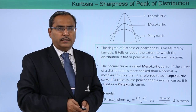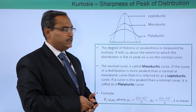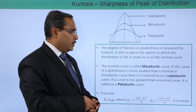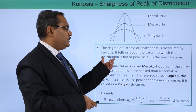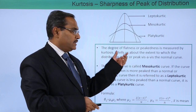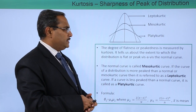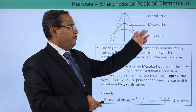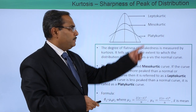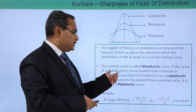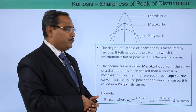Now we move on to kurtosis. Kurtosis measures the sharpness of the peak of a distribution. The degree of flatness or peakedness is measured by kurtosis — it tells us about the extent to which the distribution is flat or peaked compared to the normal curve. There are three different types of kurtosis: platykurtic, mesokurtic, and leptokurtic. The normal curve is called the mesokurtic curve. If the curve of a distribution is more peaked than the normal or mesokurtic curve, then it is referred to as leptokurtic.